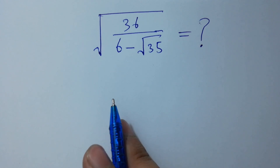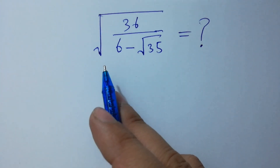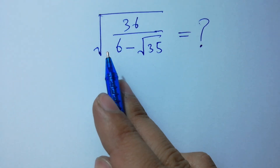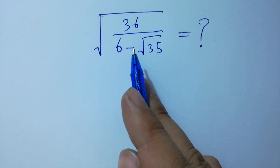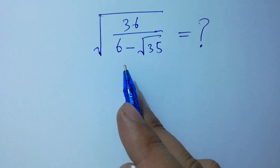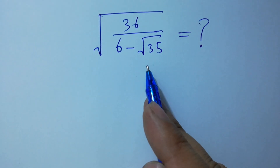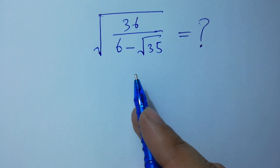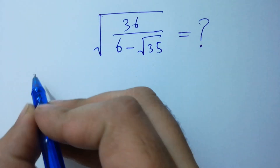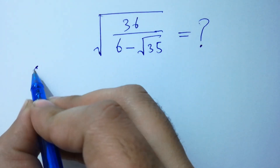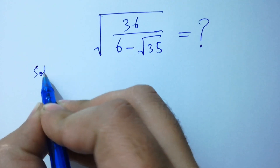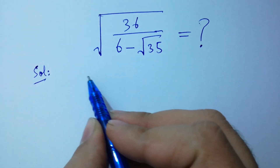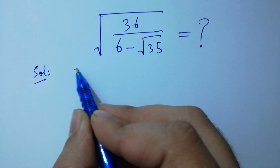Hello friends. What is equal to square root of 36 over 6 minus square root of 35? How to simplify this? Let's have a solution — rationalize it.